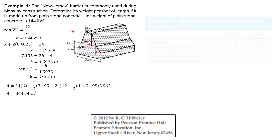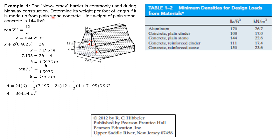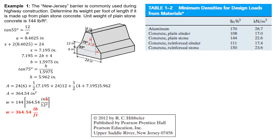From the table, the unit weight of plain stone concrete is 144 pounds per cubic foot. The area must be converted from square inches to square feet: 364.54 square inches divided by 12² (since there are 144 square inches per square foot). Multiplying by the unit weight gives the uniform weight of this New Jersey barrier equal to 364.54 pounds per foot.